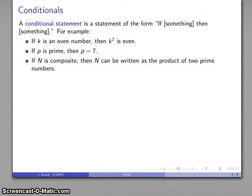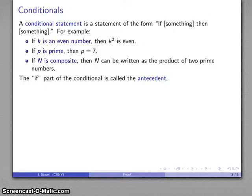Now I make no claims that any of these statements are actually true, but they are here to illustrate some key parts. If I have a conditional statement, the if portion of the conditional is called the antecedent. So here, for example, I have if k is an even number, that's our antecedent. p is prime, that's our antecedent. N is composite, that is the antecedent.